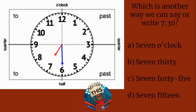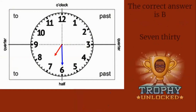Now, which is another way we can say or write 7:30? Look at your choices. You've got this. If you said B, you are correct. Great job. Write it proud.